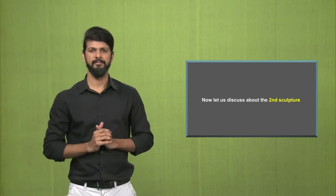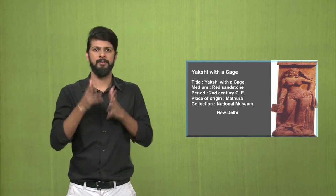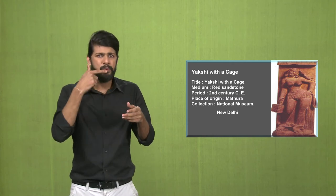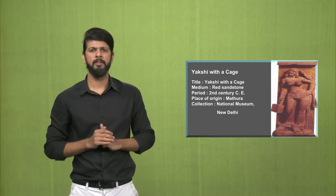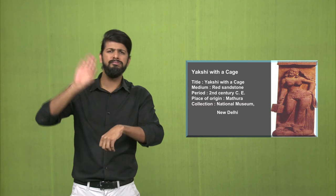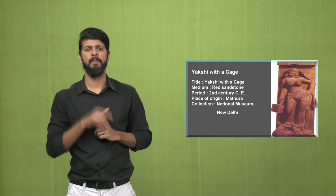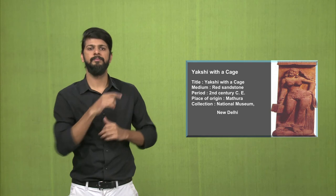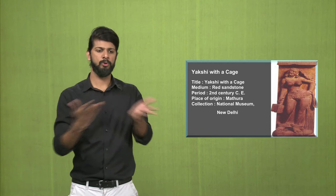Now let us discuss the second sculpture. The title is Yakshi with a Cage. The medium is red sandstone. The period of the sculpture is the second century AD. The place of origin is Mathura, and the sculpture is exhibited at the National Museum in New Delhi.